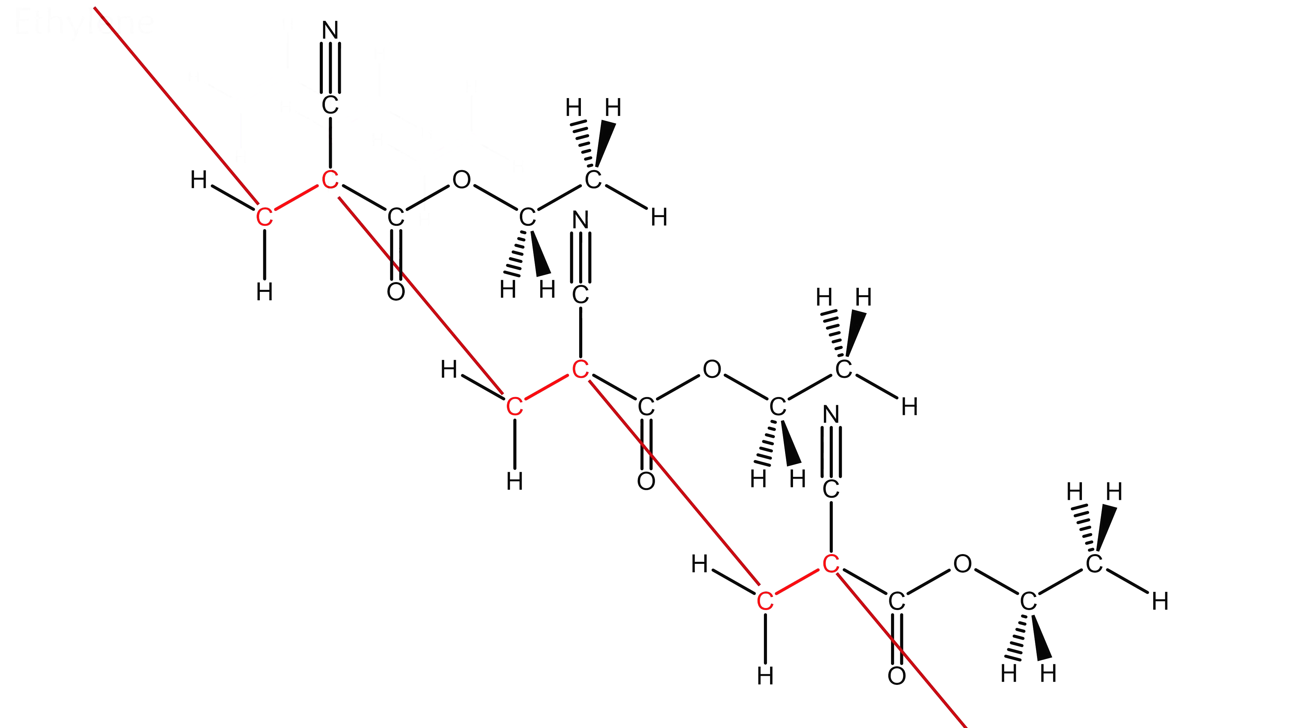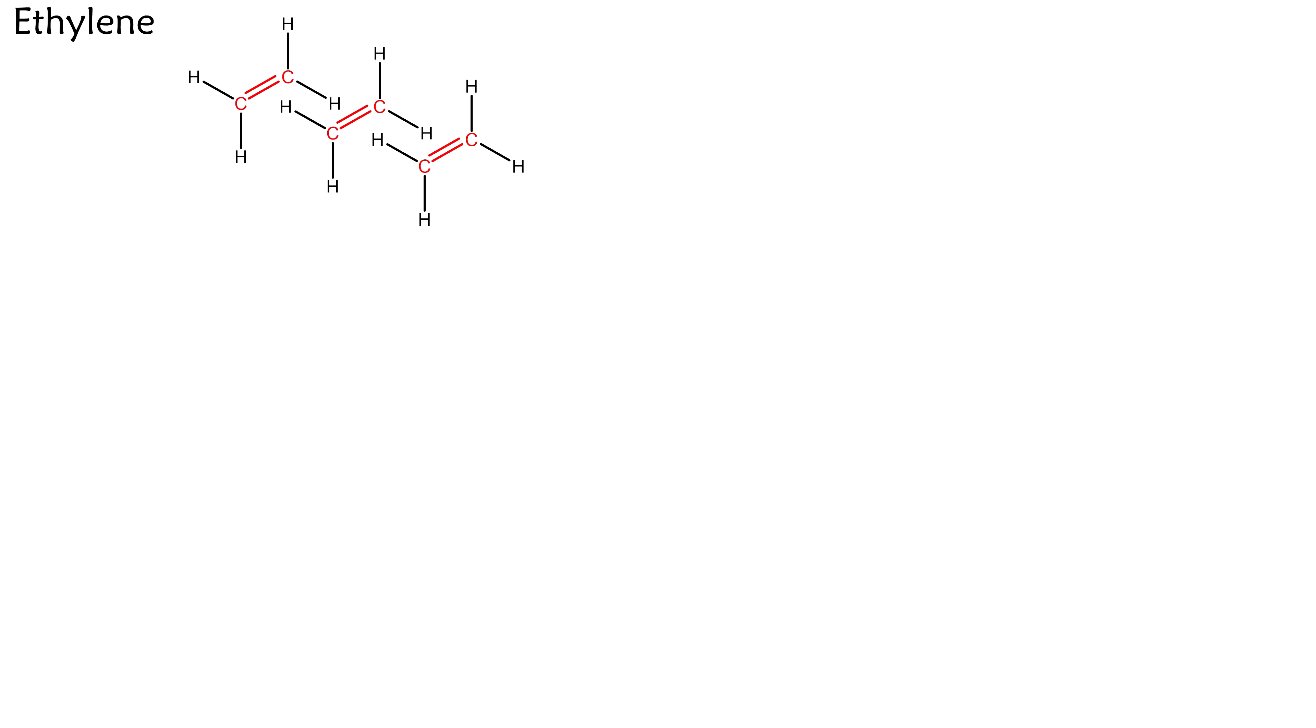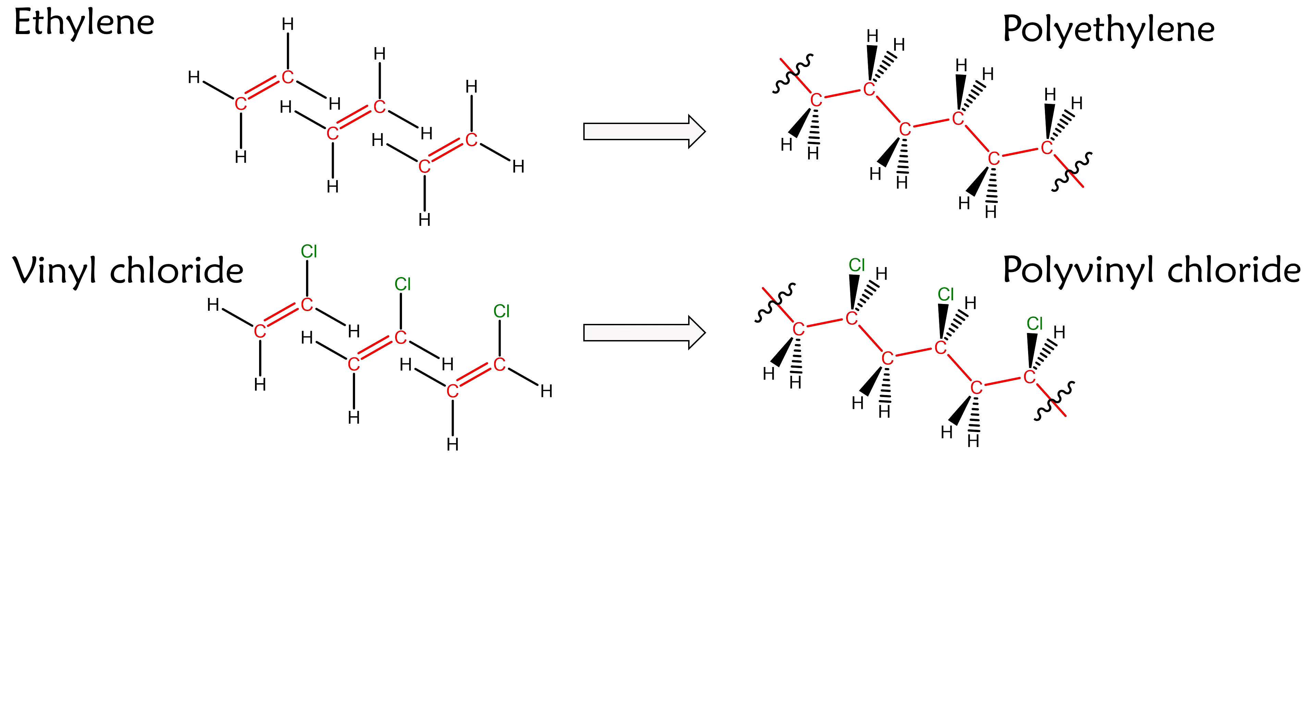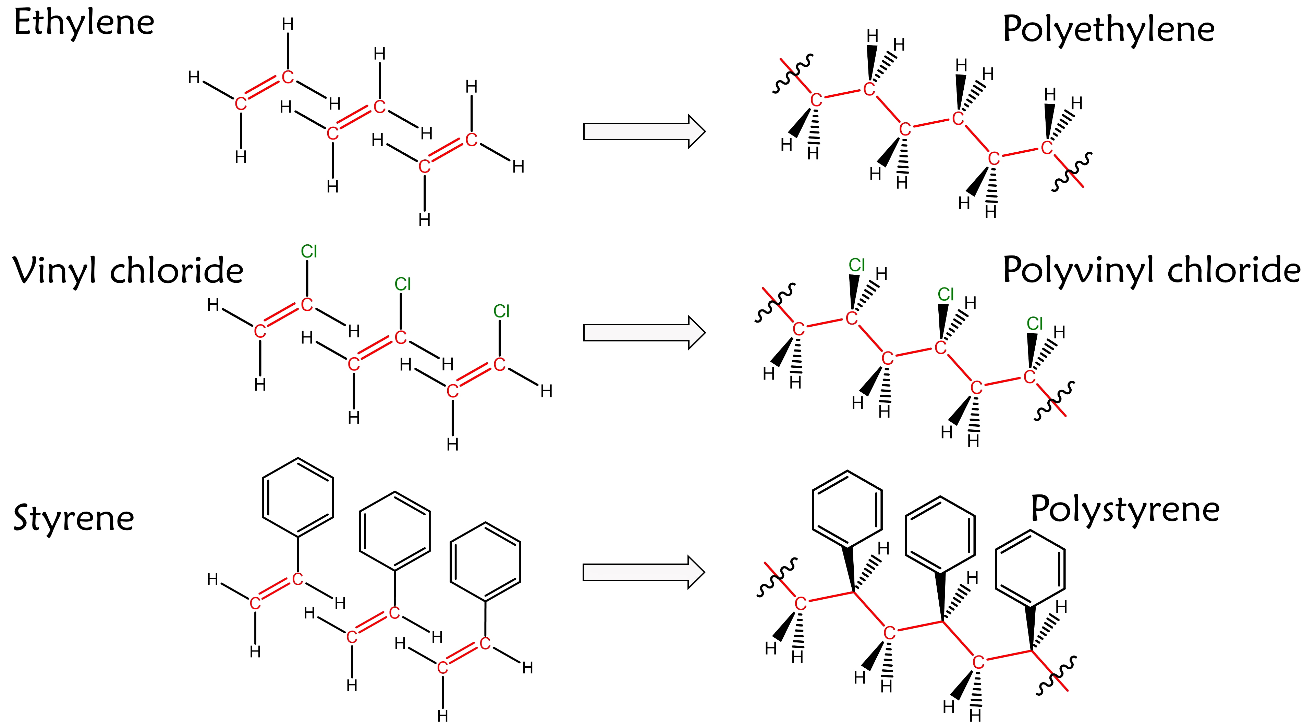The net result of this transformation from monomer to polymer chain is analogous to that for many common polymers, such as when ethylene becomes polyethylene, or when vinyl chloride becomes polyvinyl chloride, or when styrene becomes polystyrene.